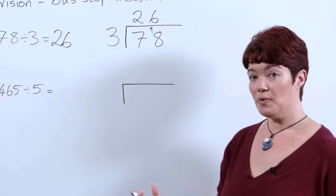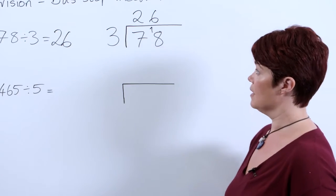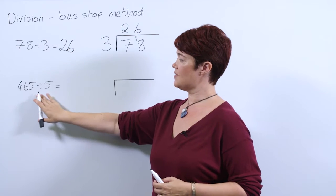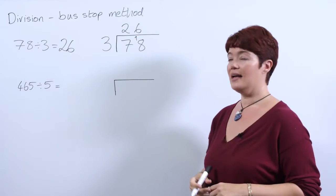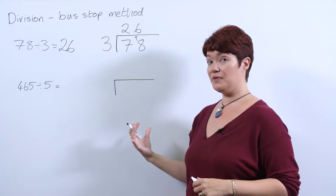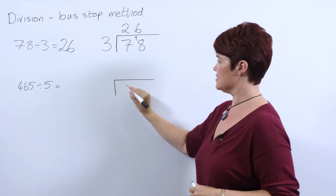We can now move on. We're looking at dividing a three-digit number, so our problem here is 465 divided by 5. Again we're using our bus stop—our dividend goes inside our bus stop and our divisor goes on the outside.